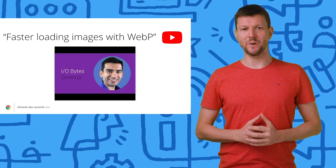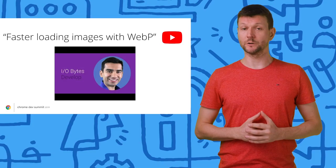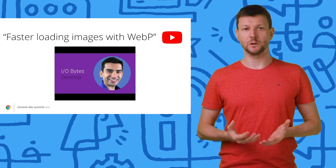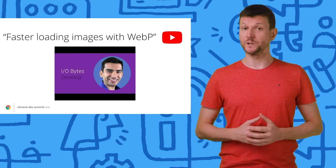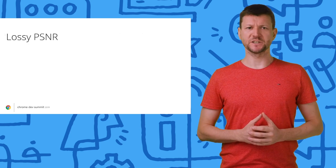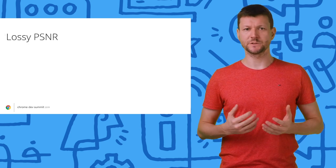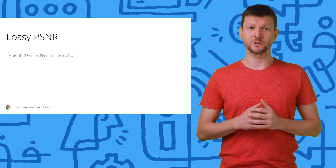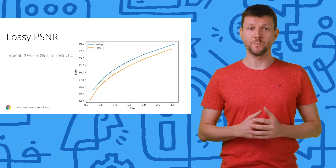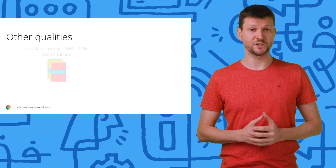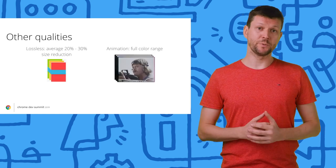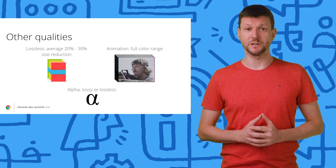WebP is an image format designed to save bytes on the wire for the web. Getting better visual quality in fewer bytes means faster load times, reduced data usage, and increased user engagement. Compared to the best JPEG encoders, WebP can reduce file sizes by 20% to 30% at the same visual quality. The lossless WebP mode sees similar savings over PNG encodes. On the animation side, WebP can produce even greater savings over GIFs.